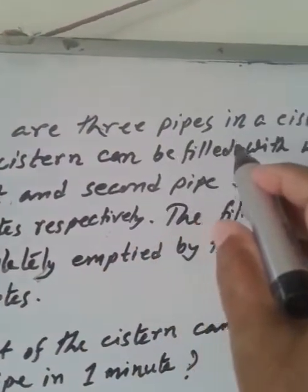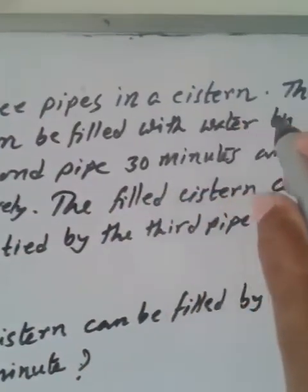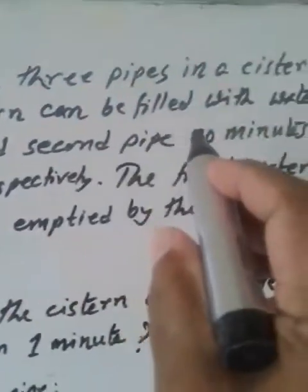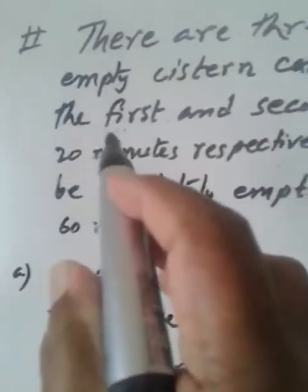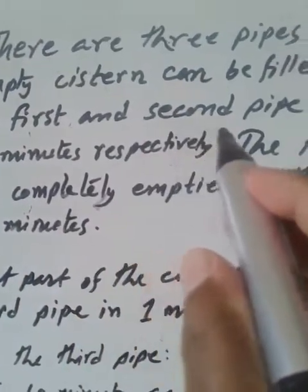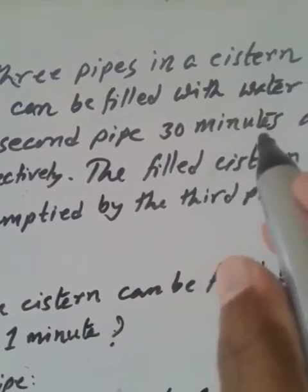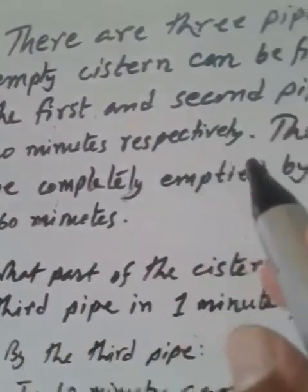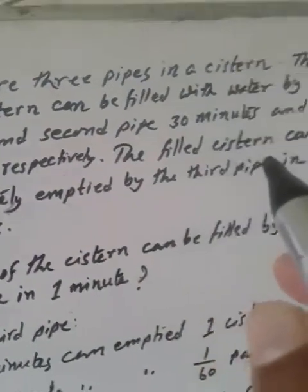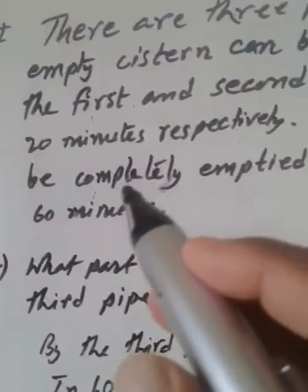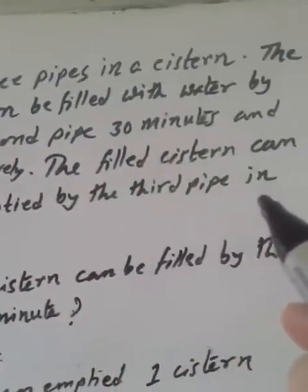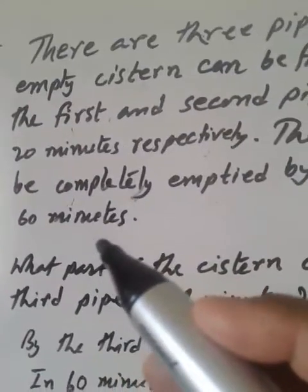There are three pipes in a cistern. The empty cistern can be filled with water by the first pipe and second pipe in 30 minutes and 20 minutes respectively. The filled cistern can be emptied by the third pipe in 60 minutes.